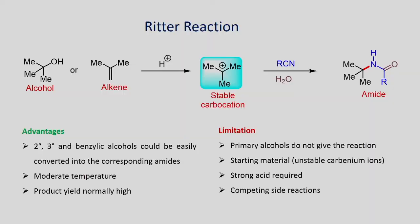The Ritter reaction is shown. If you have tertiary alcohol or a substituted alkene, when you react with acid you will form a carbocation. Once you form the carbocation, if you add a nitrile, it can undergo addition reaction to form an iminium ion, which when you do the workup — adding water — will be converted into an amide.